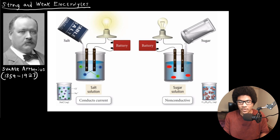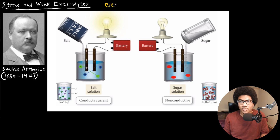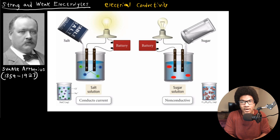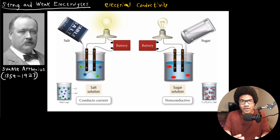Svante Arrhenius was really interested in aqueous solutions and their properties — in particular, their electrical conductivity. Electrical conductivity is basically how good something is at conducting electricity. If you run electricity through it, is it a good conductor? Will it be able to transport that electricity, or not? He was really interested in how solutions conduct electricity because he noticed that certain solutions were good conductors and others were not.